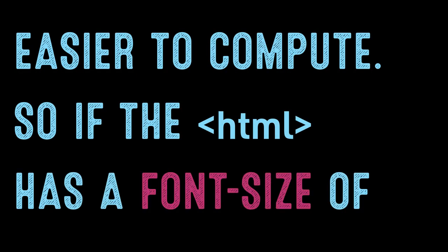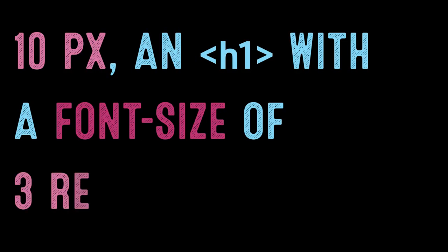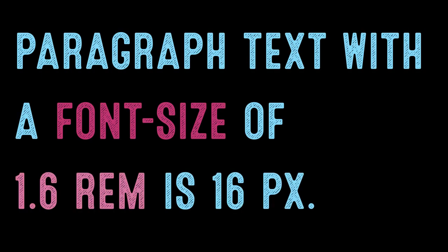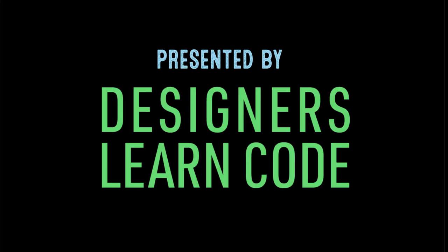So if the HTML has a font size of 10 pixels, an H1 with a font size of 3rem is 30 pixels, and paragraph text with a font size of 1.6rem is 16 pixels. Presented by Designers Learn Code.